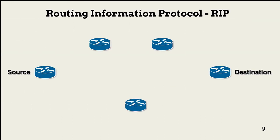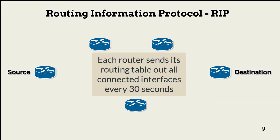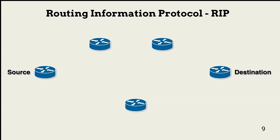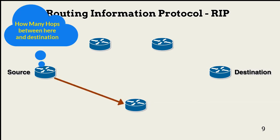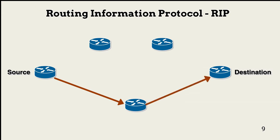The Routing Information Protocol, or RIP, is an example of a distance vector protocol. All routing information is sent to all active interfaces every 30 seconds. The only metric RIP uses to determine routing path is the number of hops — the number of routers it takes to get from one point to another. In this example, there are two hops over one path and only one over the other, so RIP will likely select the single-hop path to the destination.